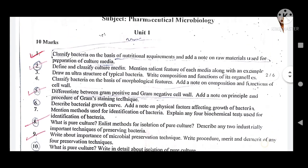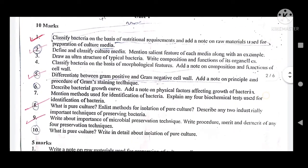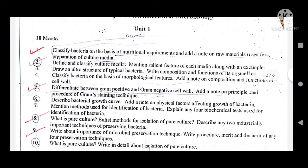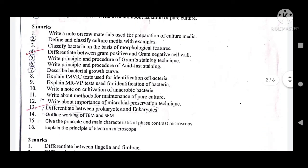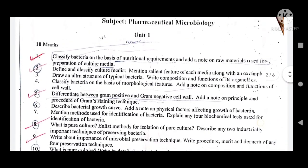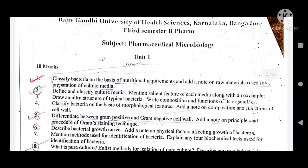These are the 10-mark and 5-mark very important questions — you can take a screenshot of them. In the next class, we will discuss Unit 2 important questions in Pharmaceutical Microbiology. These questions are definitely going to appear in your annual question paper — that is my guarantee. So don't waste your time; from today itself, read these questions and find the answers.